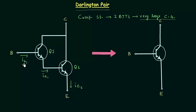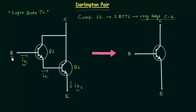So the input current for the Darlington pair is IB1 and the output current is IE2. There is double amplification, and because of this reason we also call this a super beta transistor. These two transistors work as a single transistor. This terminal is the base terminal, this terminal is the collector terminal, and this terminal here is the emitter terminal.